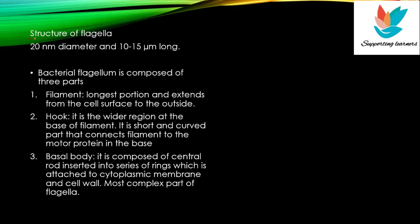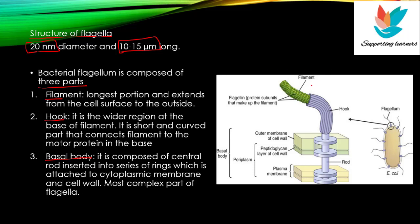Next heading is structure of flagella. The bacterial flagella has a diameter of 20 nanometers and a length of 10 to 15 micrometers, so sometimes the flagella length is bigger than the bacteria itself. There are 3 parts of flagella: filament, hook, and basal body. The outermost structure that extends outside the cell surface is the filament — it is the longest portion of the flagella and is made of flagellin proteins.